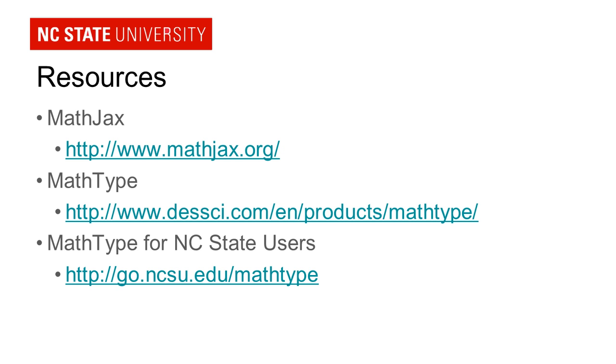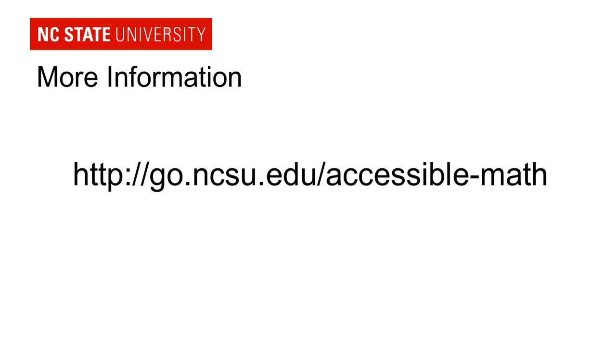So here are a list of resources that I've mentioned in this tutorial. First, a link to the MathJax website where you can go and read all the documentation about how the tools work. A link to the MathType application where you can go and purchase it. If you are an NC State user and you would like MathType, you can also just go to the third URL, go.ncsu.edu/mathtype, to download a copy of it. These links will all be provided in the description of the video. And finally, for any of the code samples that have been in this presentation or for any additional information, you can go to the link go.ncsu.edu/accessible-math.